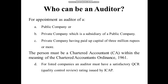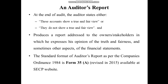Now, who can be the auditor? For the appointment of an auditor, a few things must be kept in mind with respect to the form of business ownership. For a public company, a private company that is a subsidiary of a public company, or a private company with paid-up capital of three million rupees or more, the auditor must be a Chartered Accountant within the meaning of the Chartered Accountants Ordinance 2021. For listed companies, there is an additional requirement: the auditor must have a satisfactory QCR — Quality Control Review — rating issued by ICAP.